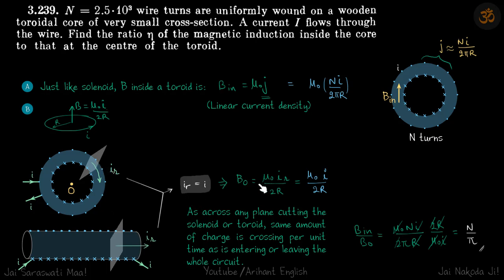Which implies, we will use this result now, that B at the center because of this current i is μ₀iᵣ by 2r and iᵣ is equal to i. So B₀ is μ₀i by 2r.